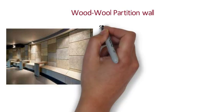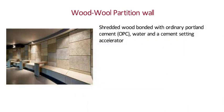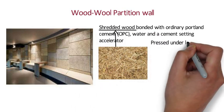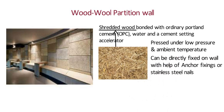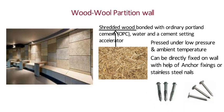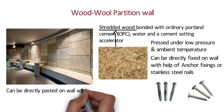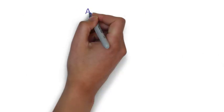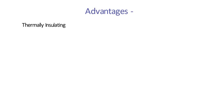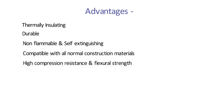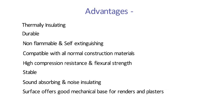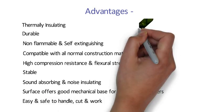Wood Wool Partition Wall: It is made of shredded wood bonded with ordinary Portland cement, water and a suitable cement setting accelerator, pressed under low pressure and ambient temperature. Wood wool boards can be directly fixed on a wall with anchor fixings or stainless steel nails, or pasted with glass glue or compatible plaster material. The advantages are: thermally insulating, durable, non-flammable and self-extinguishing, compatible with all normal construction materials, high compression resistance and flexural strength, stable, sound absorbing and noise insulating. The surface offers a good mechanical base for renders and plasters, is easy and safe to handle, cut and work, and is eco-friendly.